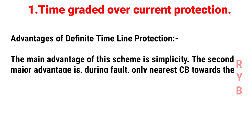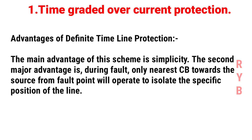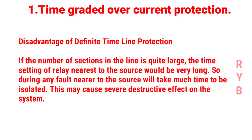The main advantage of this definite time protection scheme is its simplicity. During a fault, only the nearest circuit breaker towards the source from the fault point operates to isolate the specific section of the line. However, if the number of sections is quite large, the time setting of the relay nearest to the source would be very long, causing a fault near the source to take much more time to be isolated, which may cause severe damage to the system.